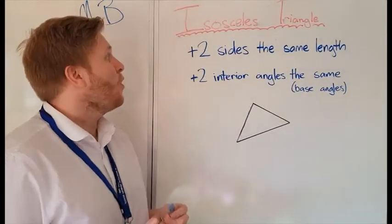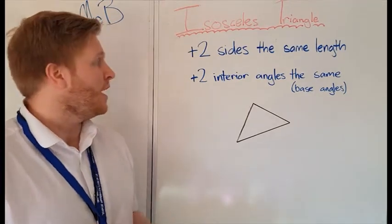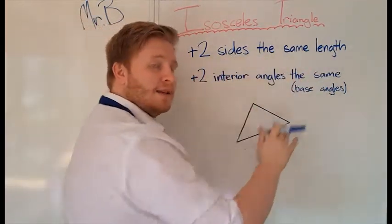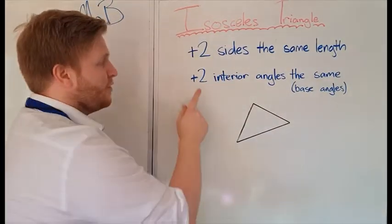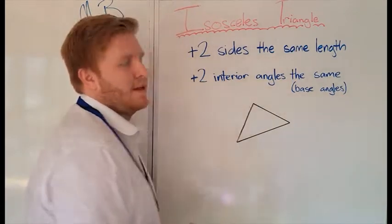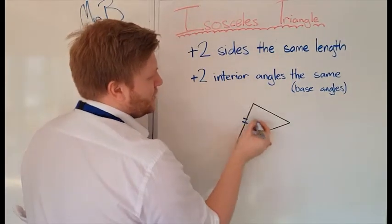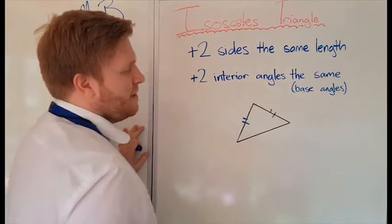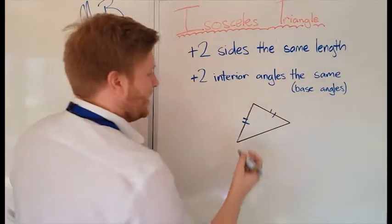Now we're moving on to the isosceles triangle. Now an isosceles triangle, we spot these because they have two sides that are the same length, so the equilateral had three, isosceles has two, and they also have two interior angles that are the same, and these are called the base angles. So on this one, we've got two sides here that are the same, this one's a bit longer, so this means it's an isosceles.